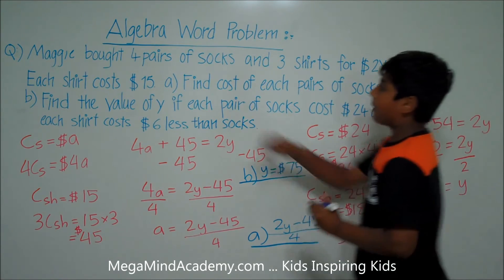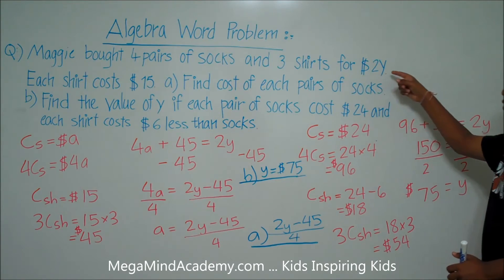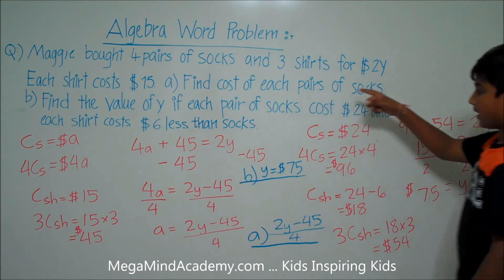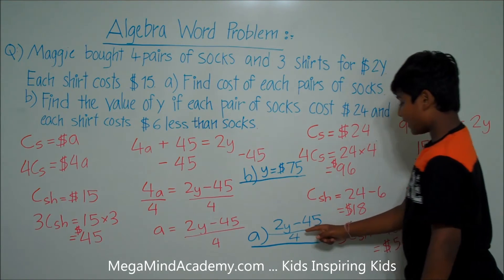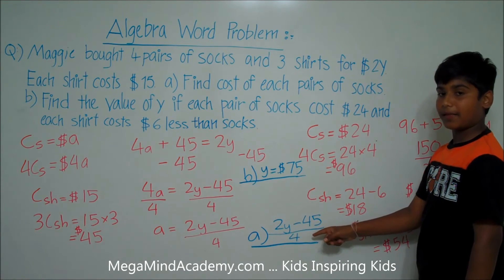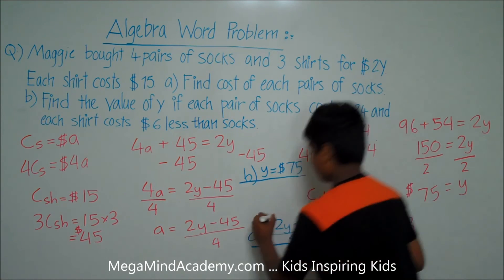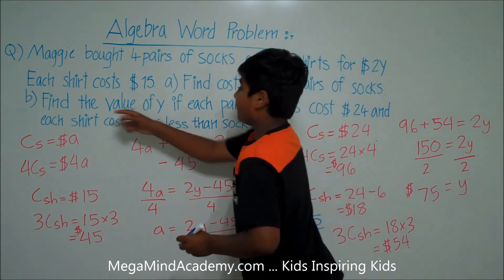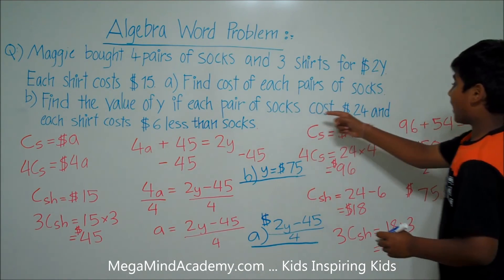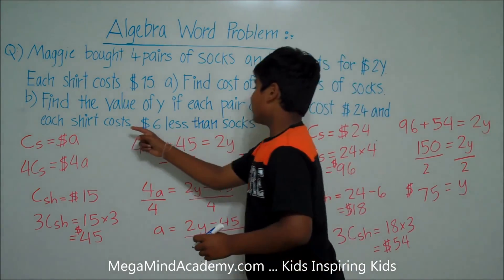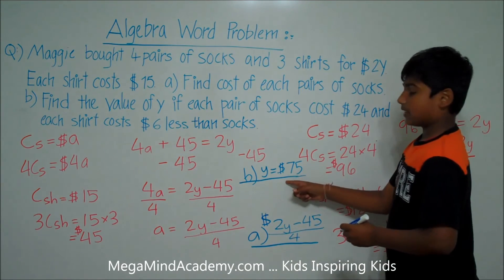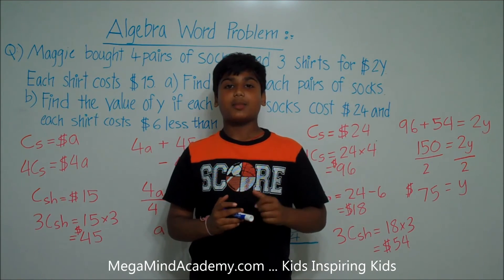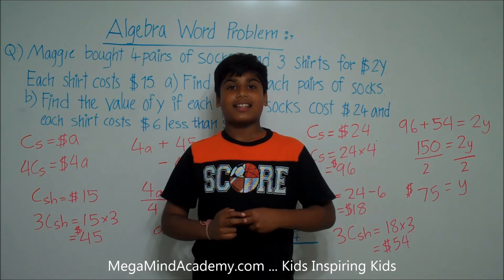To summarize: Maggie bought four pairs of socks and three shirts for 2Y dollars, and each shirt costs fifteen dollars. The cost of each pair of socks is (2Y minus 45) divided by 4 dollars. The value of Y, when each pair of socks is twenty-four dollars and each shirt is six dollars less than socks, is Y equals seventy-five dollars. Today we learned about algebra word problems — thank you for watching!